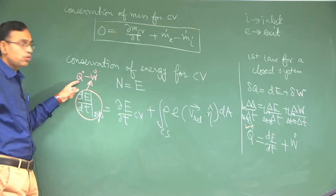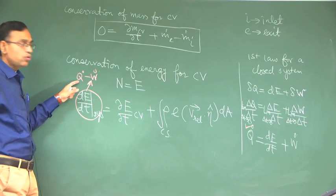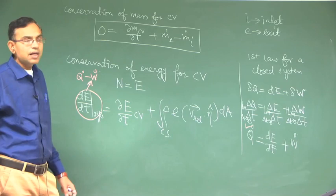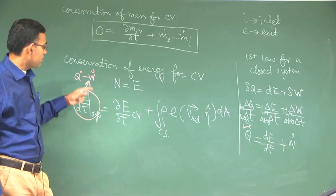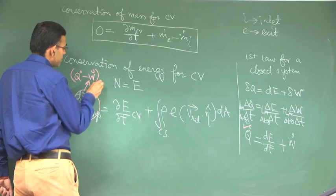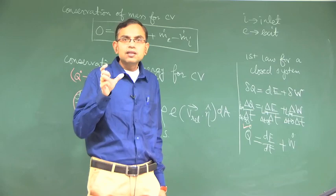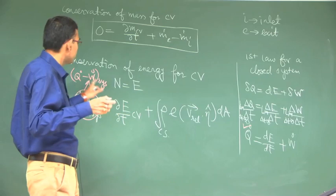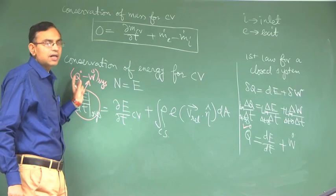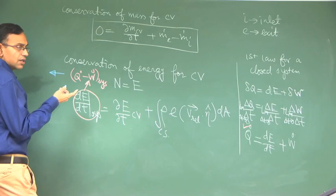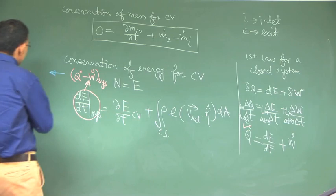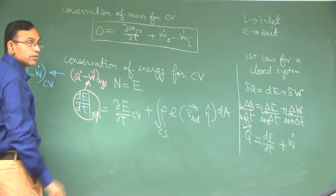So now you write this as q-dot minus w-dot. The question is: is this q-dot minus w-dot for the system or for the control volume? Fundamentally it is for the system, but you have to keep in mind that the Reynolds transport theorem was derived under the condition when the system almost converts to the control volume. So heat transfer and work done for the system is the same as for the control volume, and this is as good as q-dot minus w-dot for the control volume.